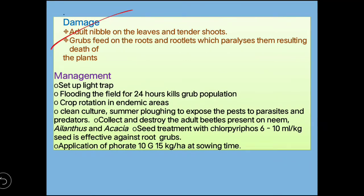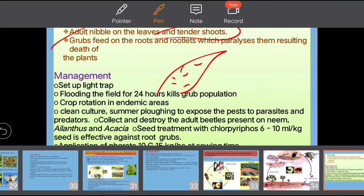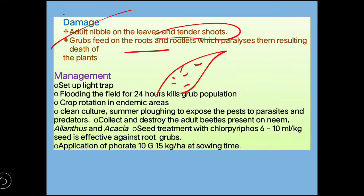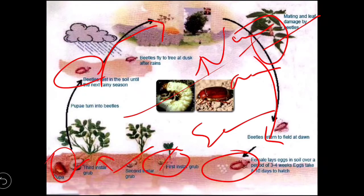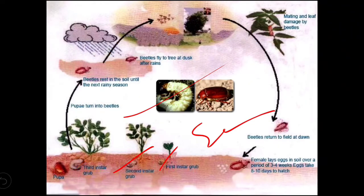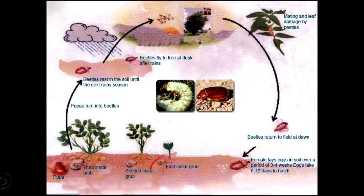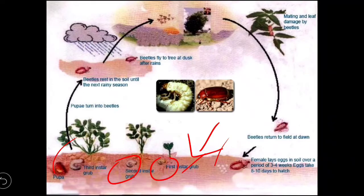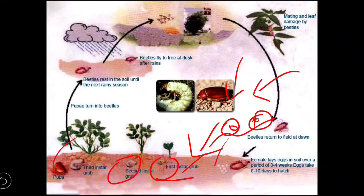The adult beetles nibble leaves and tender shoots, while grubs feed on the roots and rootlets in the soil. For management, since larvae, pupae, and adults all stay in the soil, you can do deep summer plowing to expose them to predators and parasites.